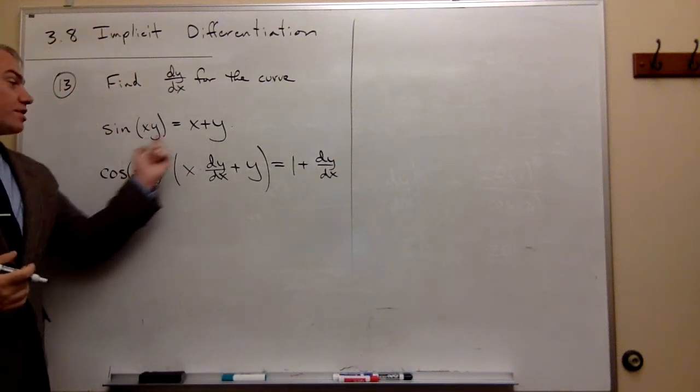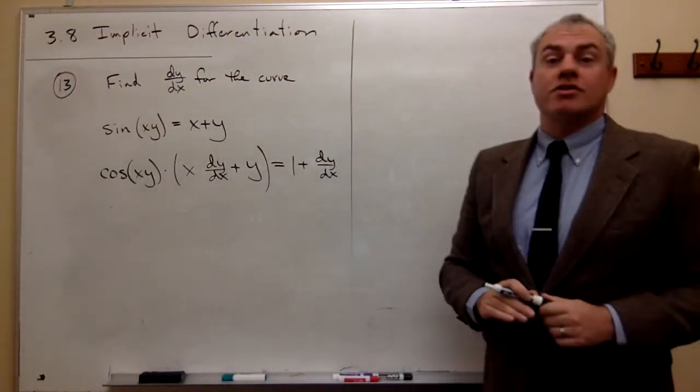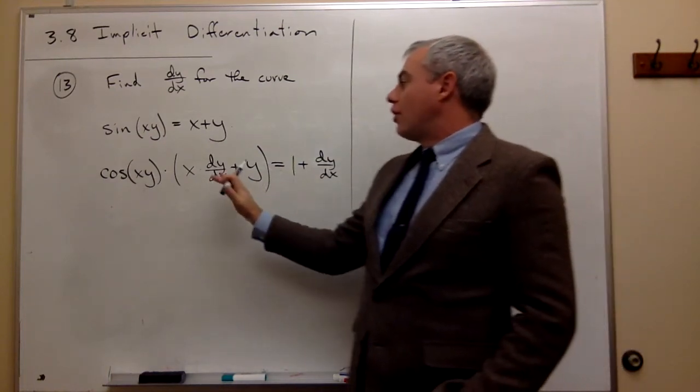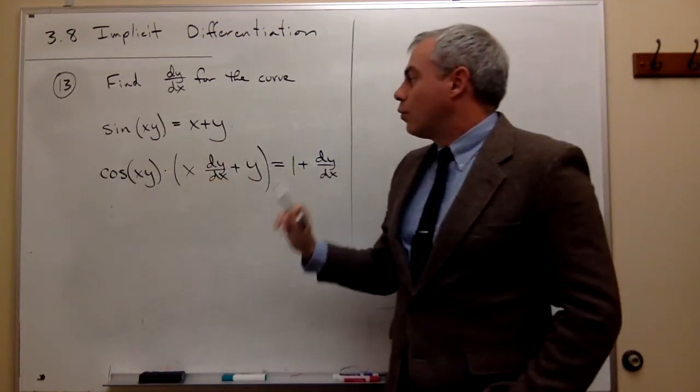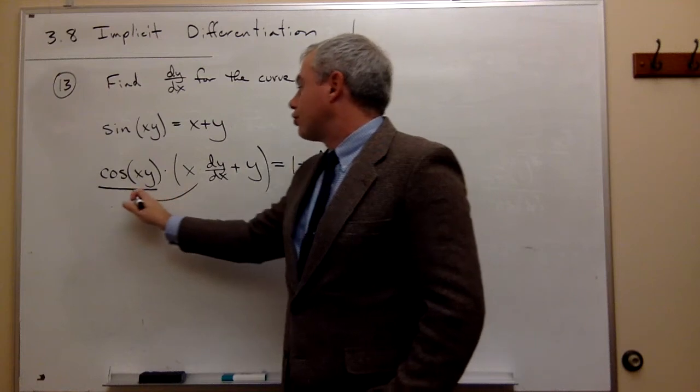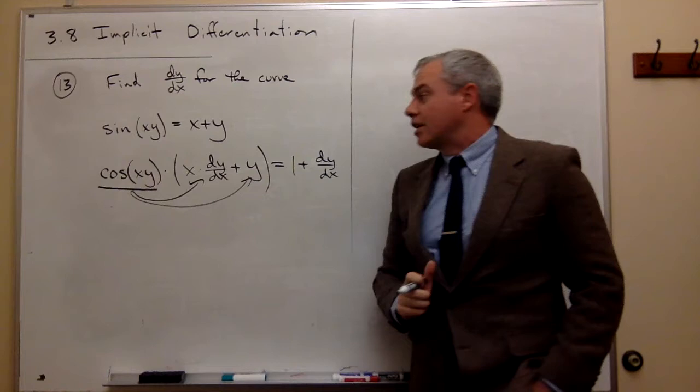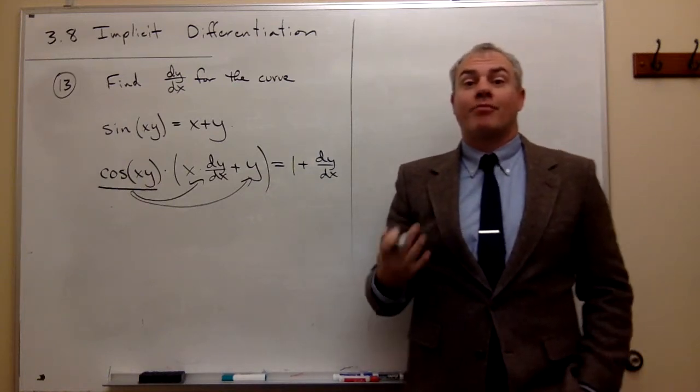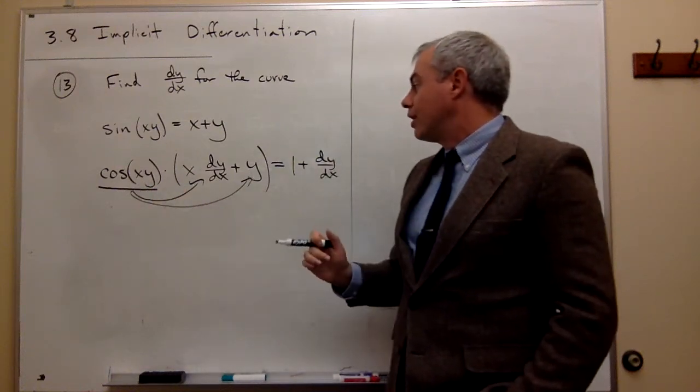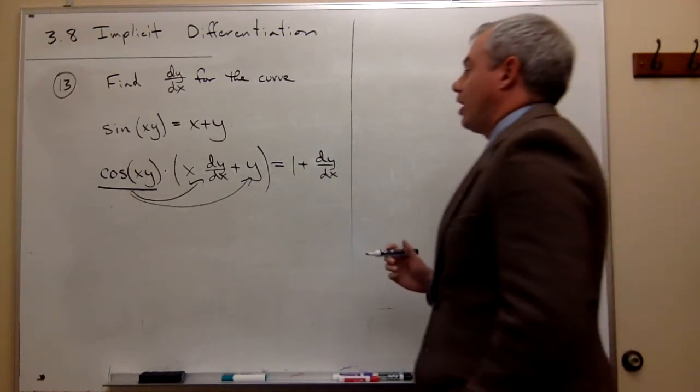Now the key is we need to solve this thing for dy/dx. This is a place where students can make a lot of mistakes in the algebra, because if you try to start solving right now for dy/dx without multiplying this cosine of xy through to both of these terms that are inside the parentheses, you have a lot of problems. So what we need to do is first let's multiply this cos(xy) through, then we'll start working to solve for dy/dx.